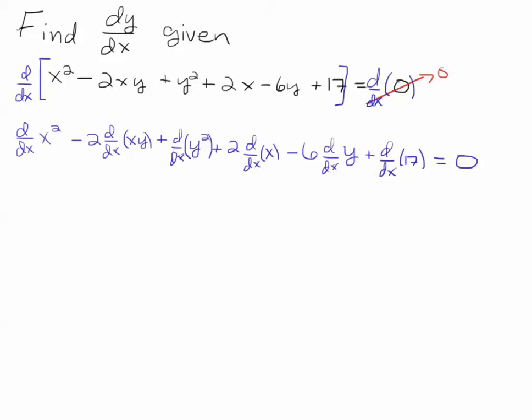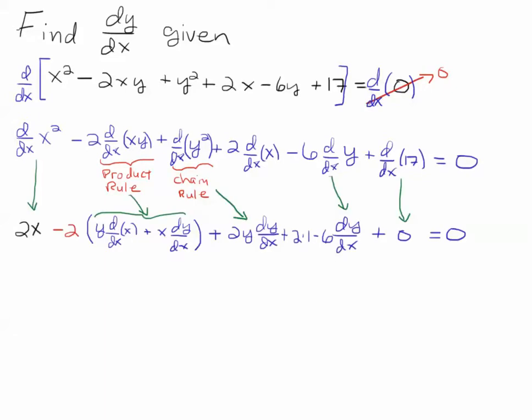So after I complete that step, I realize that I have to use the product rule and the chain rule in both of those terms. And here we go. So the derivative of x squared is 2x. That minus 2 is sitting outside, and once again I put those parentheses down there, and here I use the product rule.